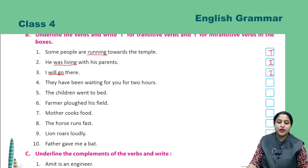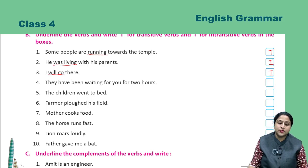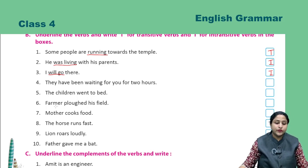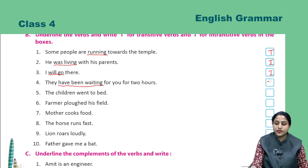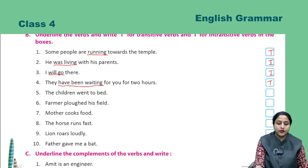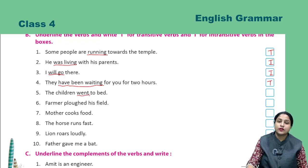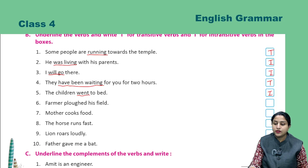Next: 'They have been waiting for you for two hours.' What is the verb here? The verb is 'have been waiting', and this is a transitive verb — T. Next: 'The children went to bed.' 'Went' is the verb, and this is an intransitive verb — I.